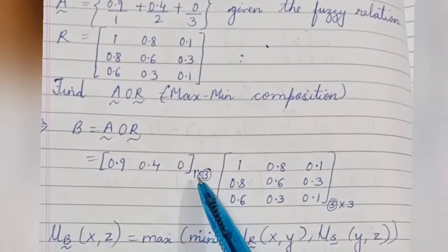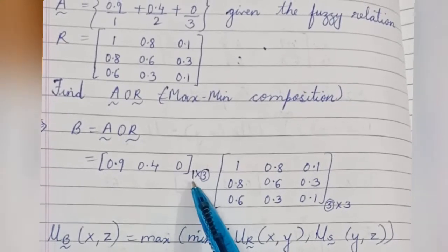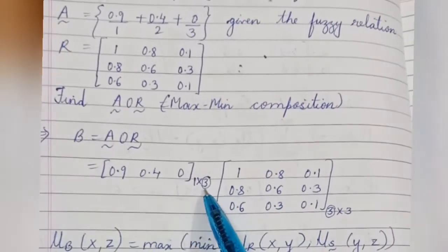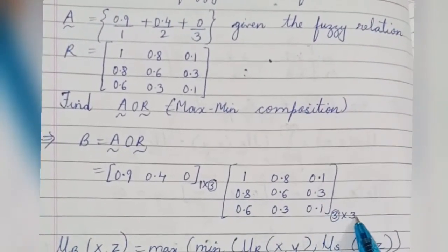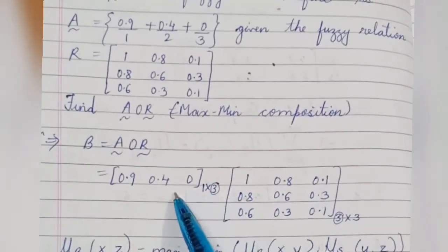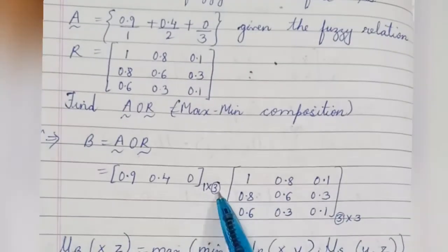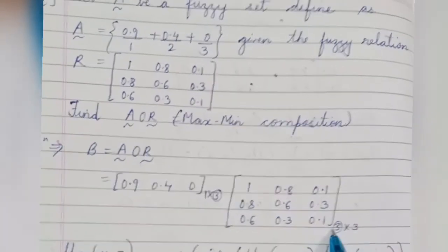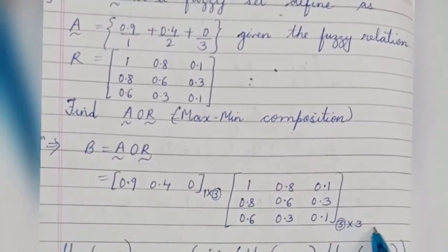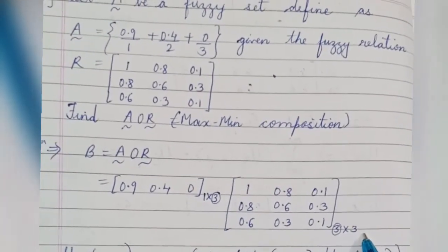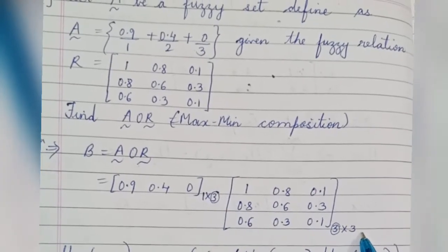For the composition, first write the size of the first matrix: 1×3 (row and column). Then the size of the second matrix: 3×3. The column of the first matrix and the row of the second matrix are both 3, so they match. The final result matrix will be of size 1×3.